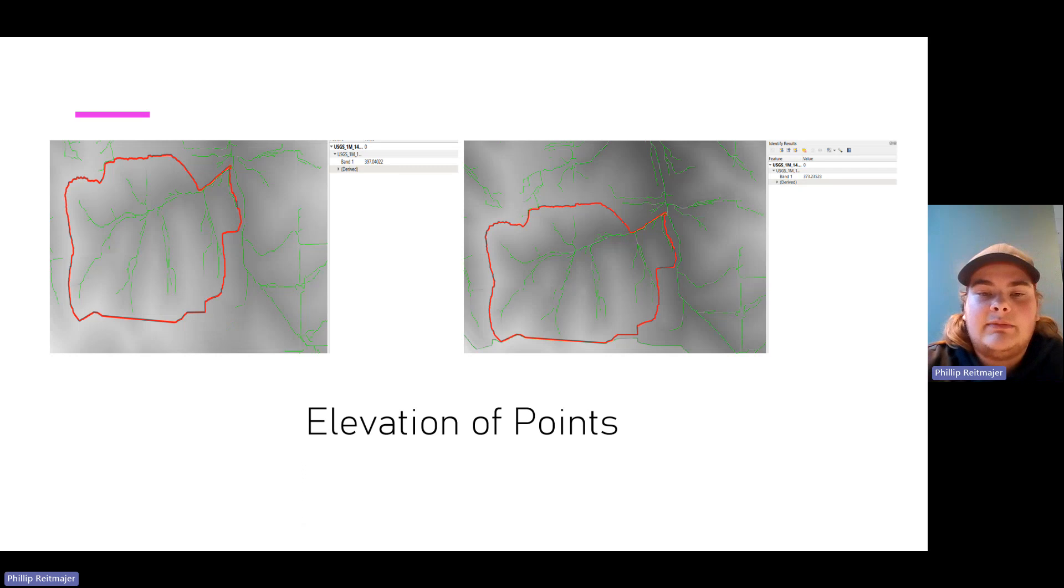Next, I'm finding the elevation for Kirpich equation. I will also find length in the next slide. I decided that the farthest point was the bottom left. And then I used the identify tool and found the elevation of the bottom left corner, which is about 397 meters. And then the outlet point elevation to the right, the identify tool is about 373 meters.